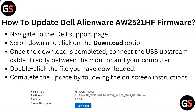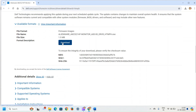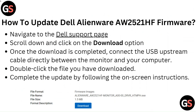To update the Dell Alienware AW2521HF firmware, navigate to the Dell support page, scroll down and click on the download option. Once the download is completed, connect the USB upstream cable directly between the monitor and your computer. Double-click the downloaded file and complete the update by following the on-screen instructions.